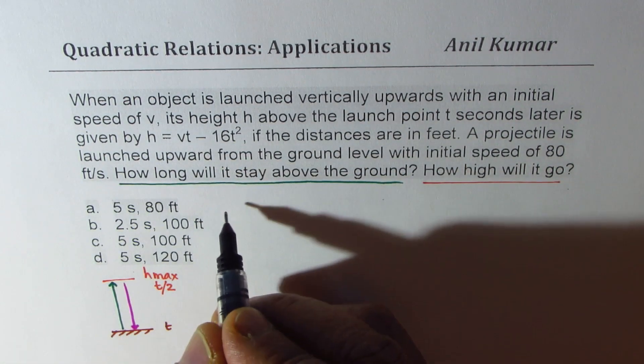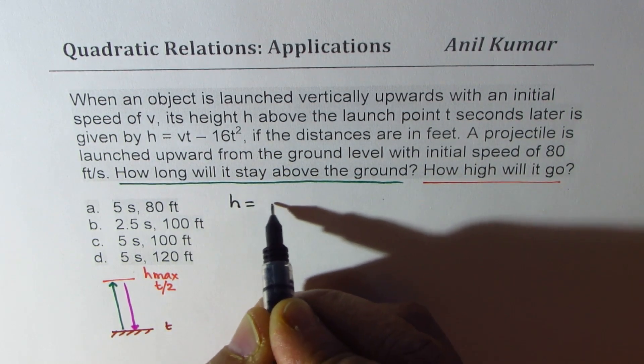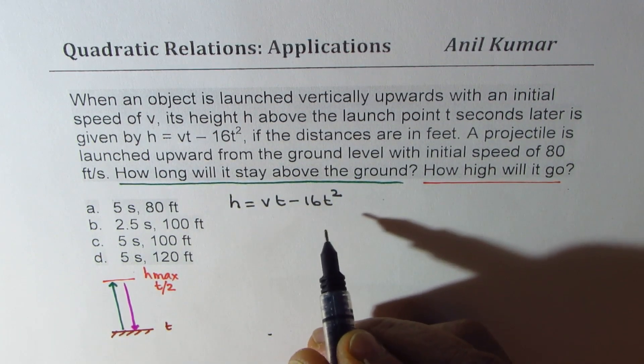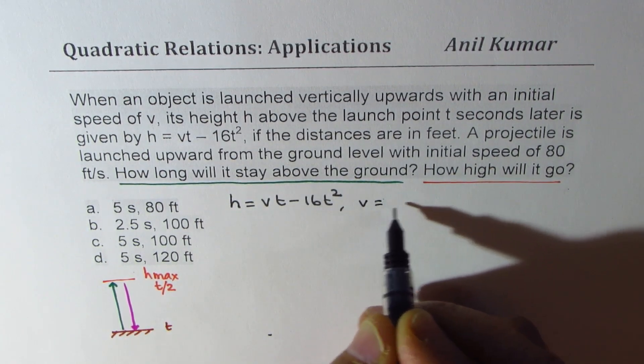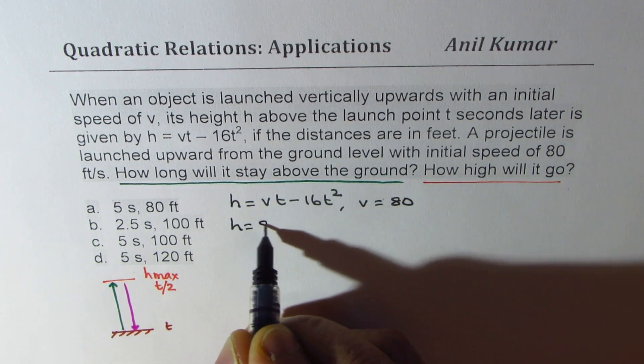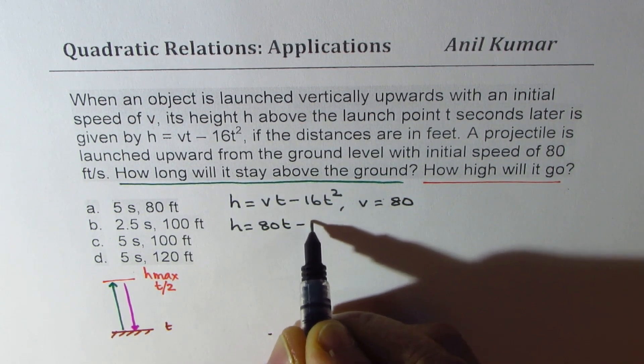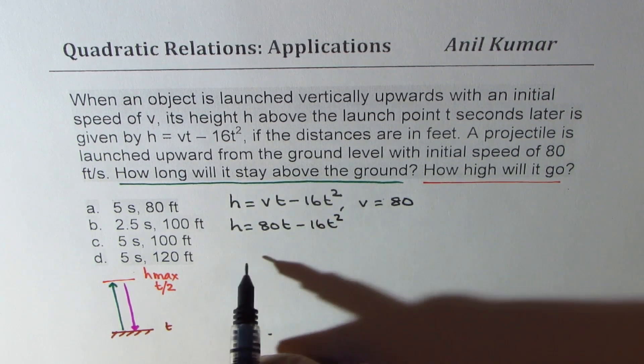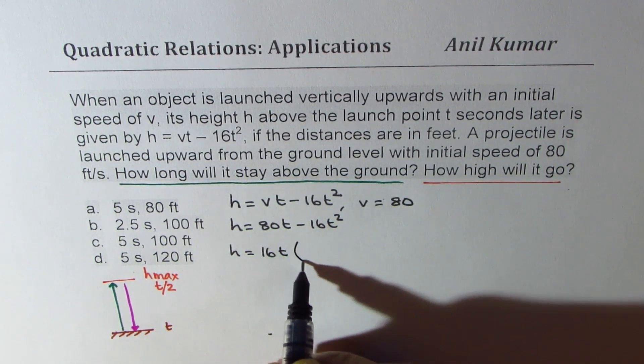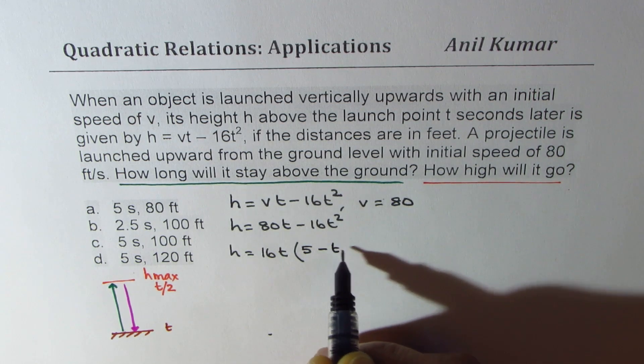Now, we are fortunately given the equation as h = vt - 16t². If v = 80, substituting 80, we get 80t - 16t². This could be written in factored form. 16t is a common factor. We get 16t(5 - t).